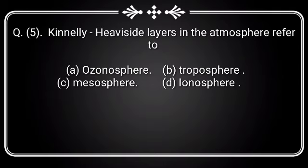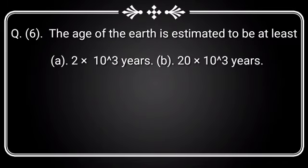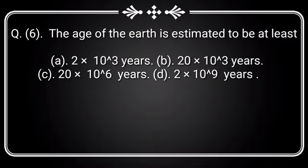Question 5: Kennelly-Heaviside layers in the atmosphere refer to — Option A: Ozonosphere, Option B: Troposphere, Option C: Mesosphere, Option D: Ionosphere. Answer is Option D: Ionosphere.